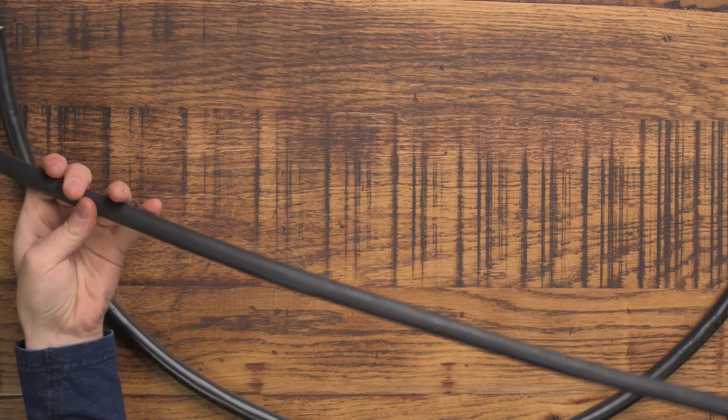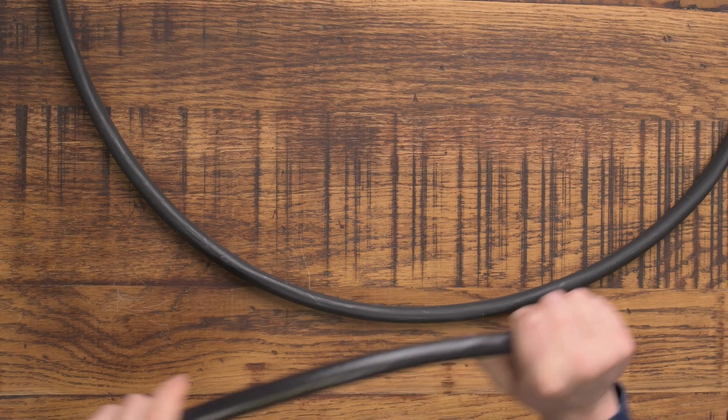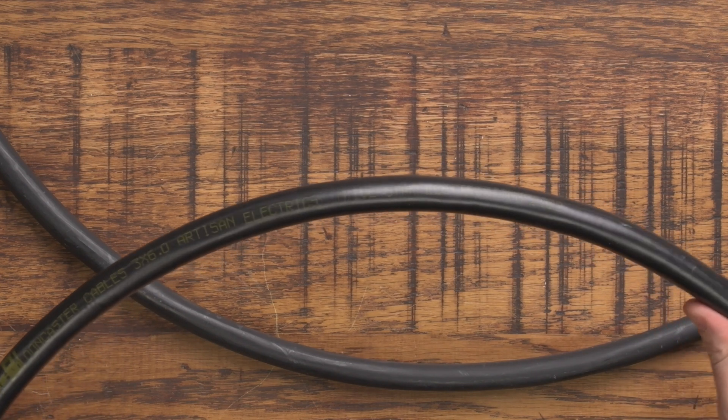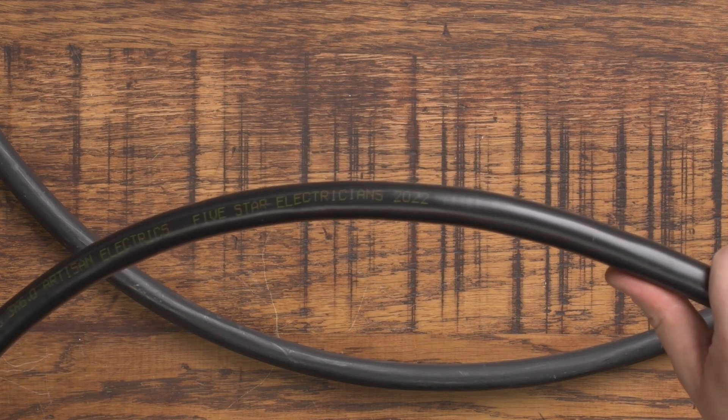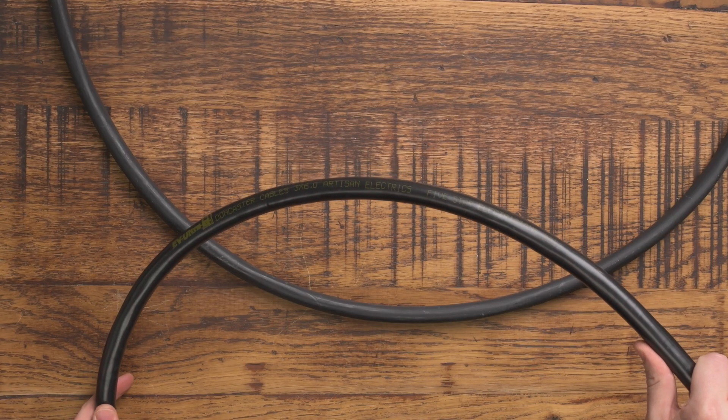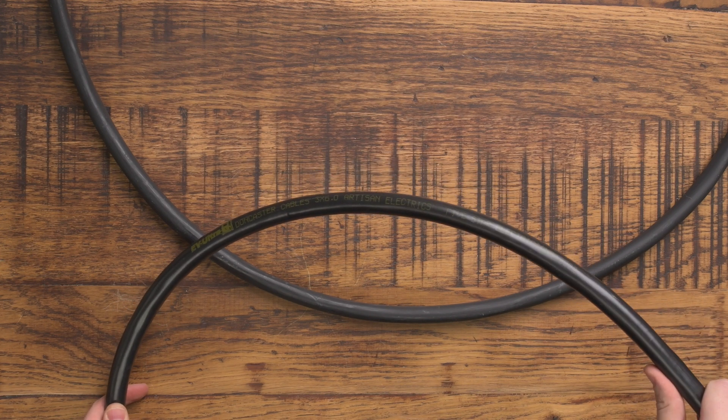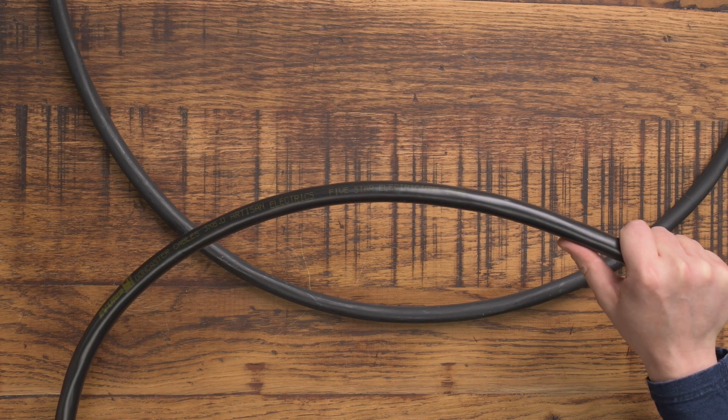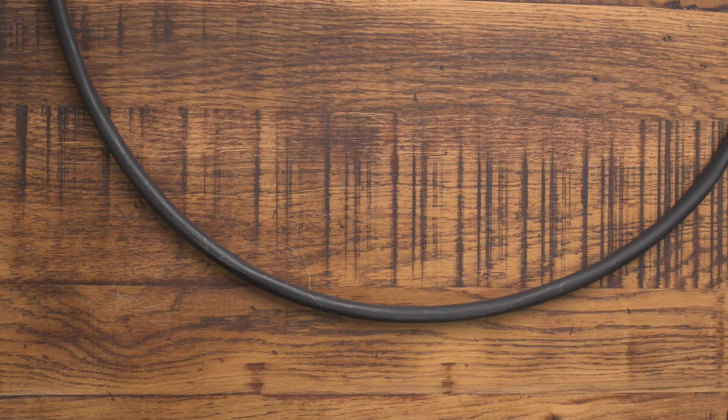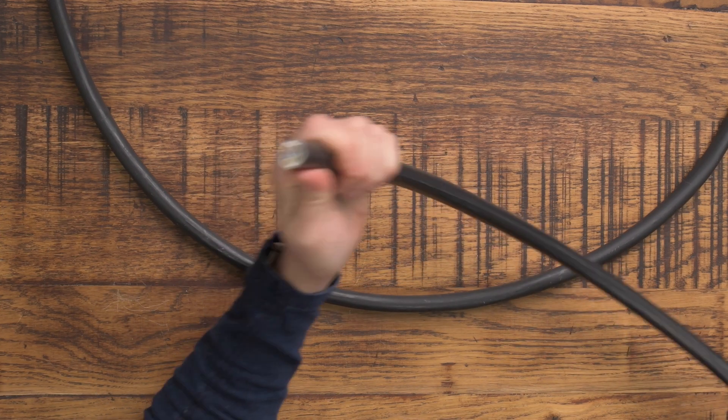First of all looking at the outside, Doncaster Cables has obviously got its branding. Not to be biased but there seems to be some interesting writing on this one. Oh Artisan Electrics, five star electricians 2022. So this is actually the cable that we made while we were visiting the Doncaster Cables factory. It's the exact cable that they usually make from their factory, proper EV Ultra Cable and it's the Tuft sheath version.